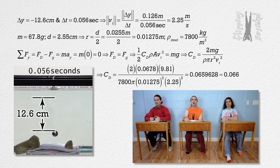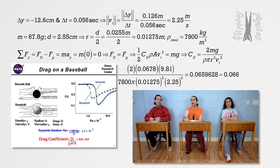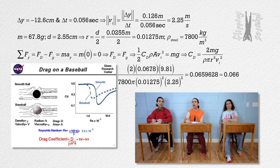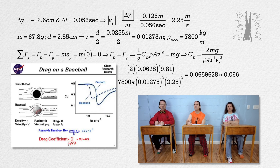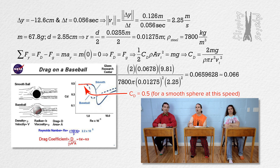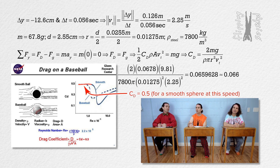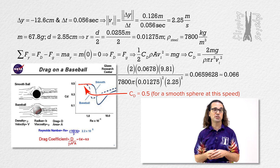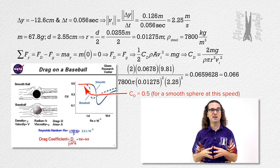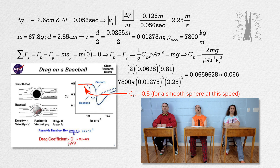That does not make sense. Why not? According to NASA's website, the drag coefficient of a smooth sphere is about 0.5. 0.066 is not close to 0.5. I looked it up after we determined the terminal velocity of a baseball. Billy, you are correct — we should get something close to 0.5. Then we did something wrong.